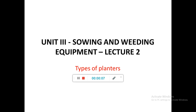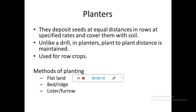In today's lecture we will look into the different types of planters and their components. Planters are equipment used to place seeds at regular intervals or distances at specific rates. The difference between a seeder or seed drill and a planter is that in a planter the hill-to-hill distance or plant-to-plant distance is also maintained. Generally, planters are used for row crops when you need uniform spacing between two hills or two plants.